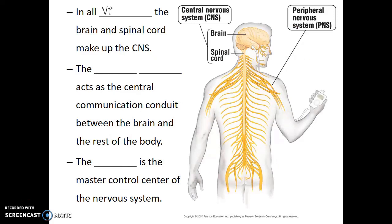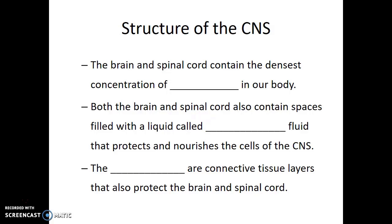In all vertebrates, the brain and the spinal cord make up the central nervous system. The spinal cord acts as the central communication conduit between the brain and the rest of the body, and the brain is the master control center of the nervous system. The brain and the spinal cord contain the densest concentration of neurons in our body, and both also contain spaces filled with a liquid called cerebrospinal fluid, which protects and nourishes the cells of the central nervous system.